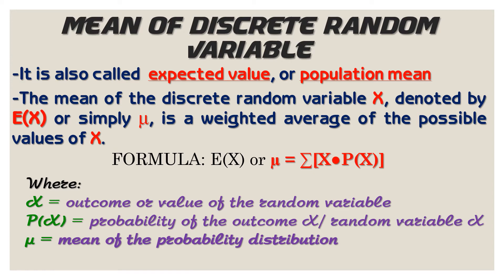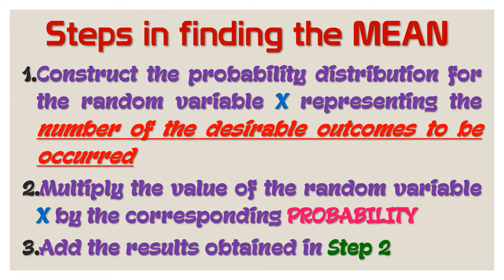Now, let's proceed to the steps. Step number one: construct the probability distribution for the random variable x as what we did on our previous topic. Second, multiply the value of the random variable x by the corresponding probability. And lastly, we are going to add the results obtained in step number two.